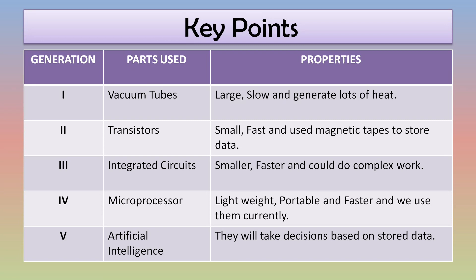First generation computers were pretty large in size, they were slow, and they consumed very much energy, because of which they generated lots of heat. For the second generation of computers, vacuum tubes were replaced by transistors. Computers became smaller in size compared to the first generation, their processing speed also increased, and they used magnetic tapes for data storage.